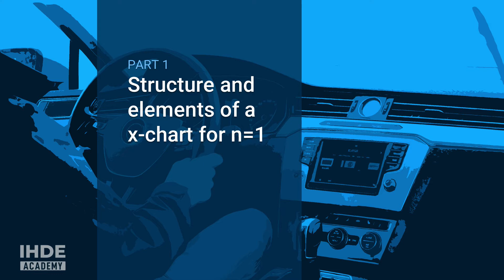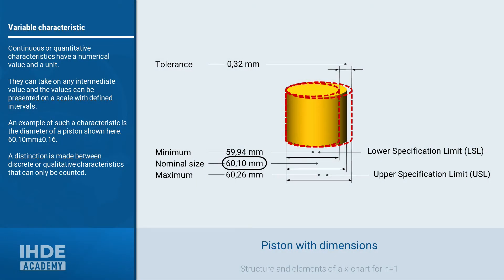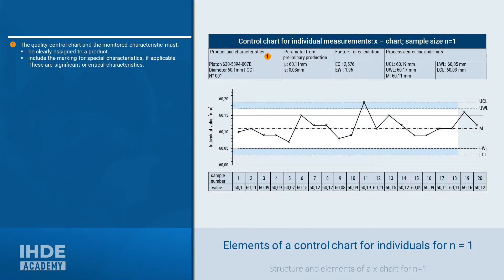Let's start with the construction of an X-Chart, which is a control chart for individual values. Let's take the diameter of this piston as an example. Its nominal size is 60.1 mm. The tolerance or the minimum or maximum dimension play no role in the calculation of the warning and control limits. The basic rule for a quality control chart is that it must be clearly assigned to a product and a process or machine.